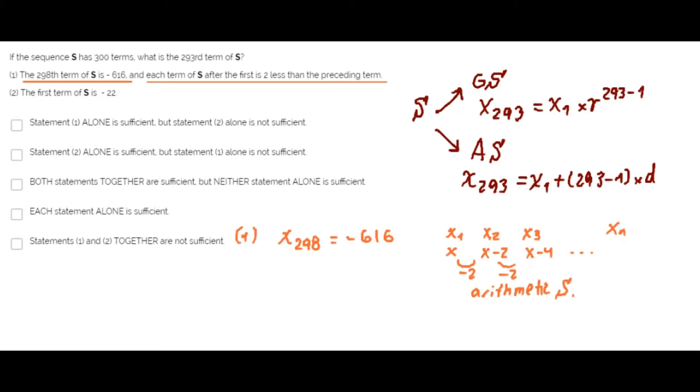Since S is an arithmetic sequence, we use this formula. From this, we can get the value of the first element. Once we have the first element, we can find the 293rd element by using this formula again. Therefore, statement 1 alone is sufficient to answer the question.